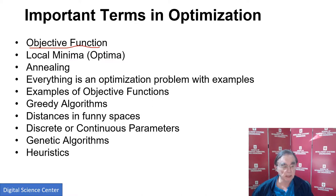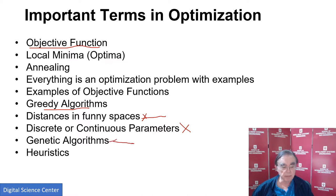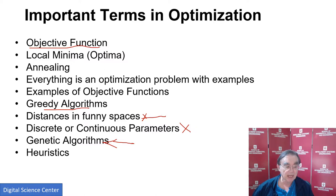We'll discuss why everything's an optimization problem with some examples, and then we'll have examples of objective functions, greedy algorithms, how we find distances to define the difference between things, how we look at discrete and continuous parameters, and also some types of algorithms which are not deep learning — genetic algorithms, and a class of algorithms which deep learning can sometimes be considered as, which is heuristics.